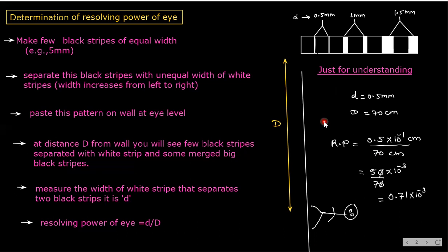You can do this experiment yourself. Give the first strip 0.5 mm, next one 1 mm, then 1.5 mm, or 1.25 — the choice is yours. Keep increasing the width of the white strips, paste the pattern on the wall, measure the width of the strip that just separates two black strips, then divide small d by capital D to get the resolving power of your eye.